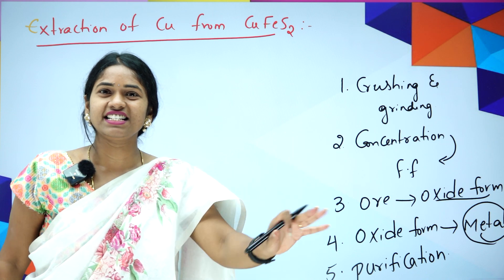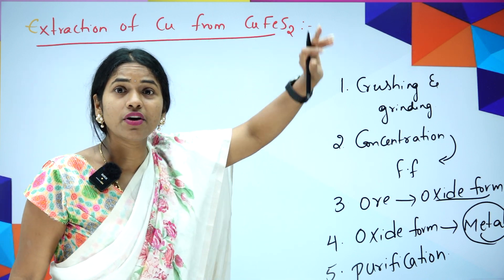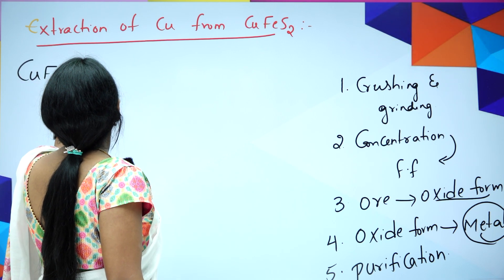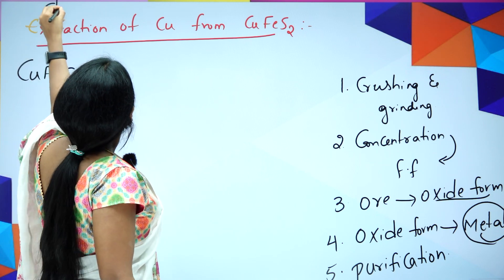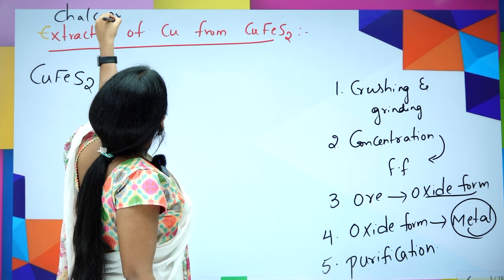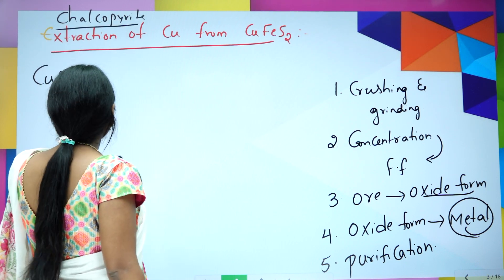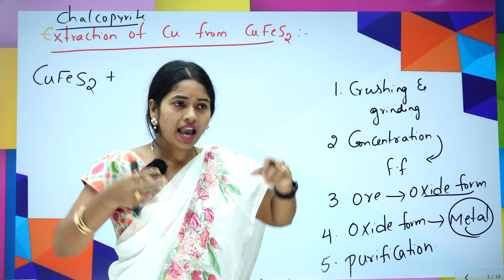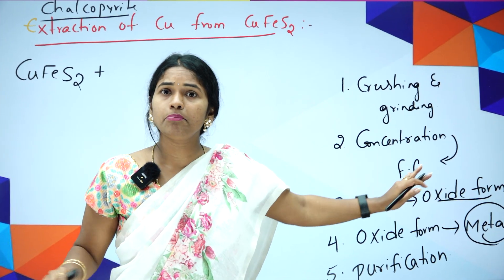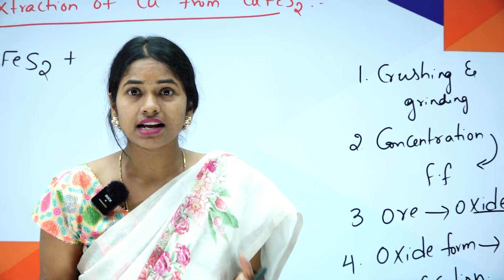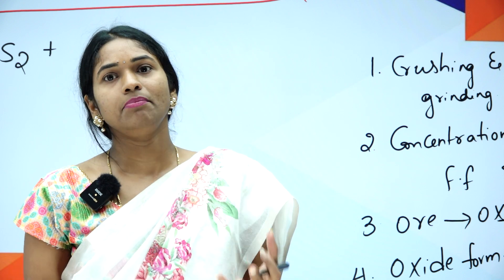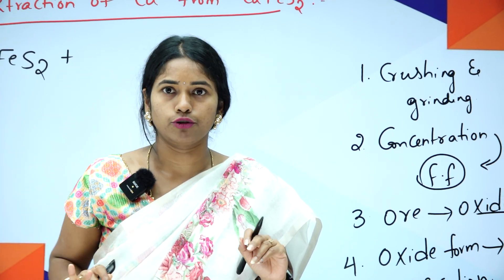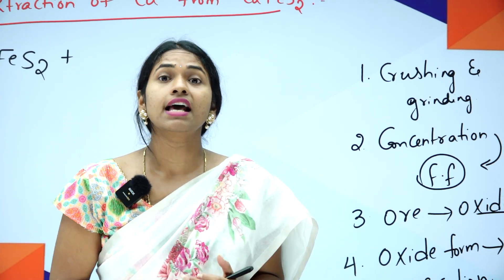Now, extraction of copper from CuFeS2. First, take this CuFeS2 — chalcopyrite — from the earth's crust and make it a fine powder. Then remove the impurities. The impurities will be sand and silica — siliceous impurities, SiO2. We will remove them by using froth flotation. So the second step is froth flotation.